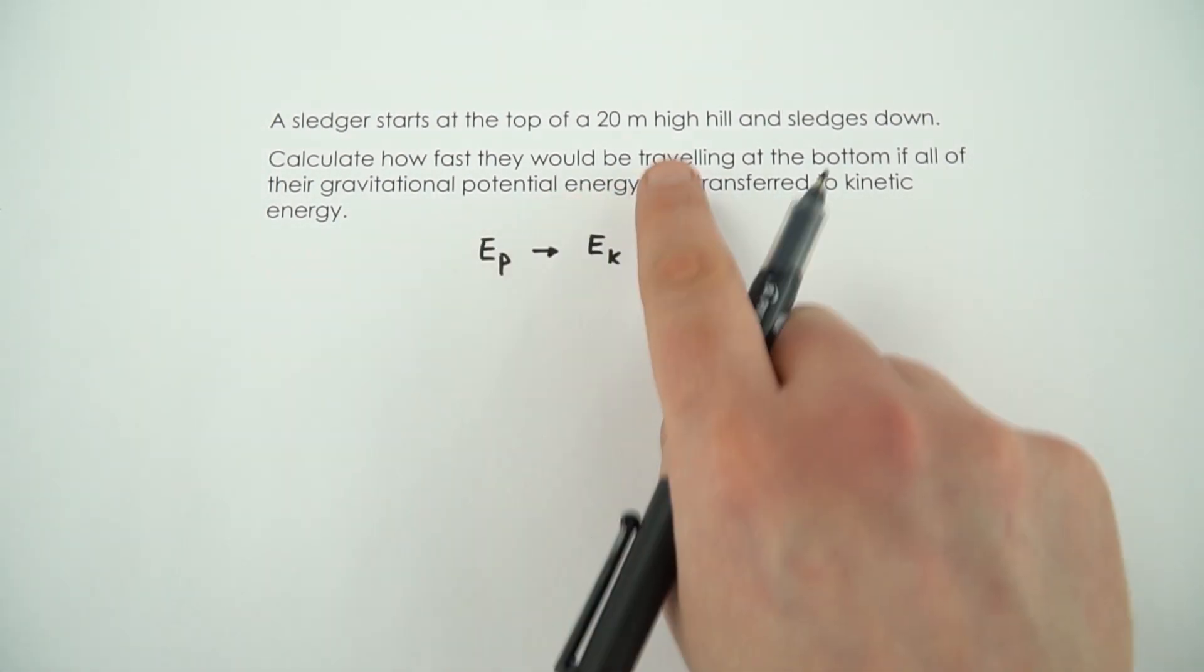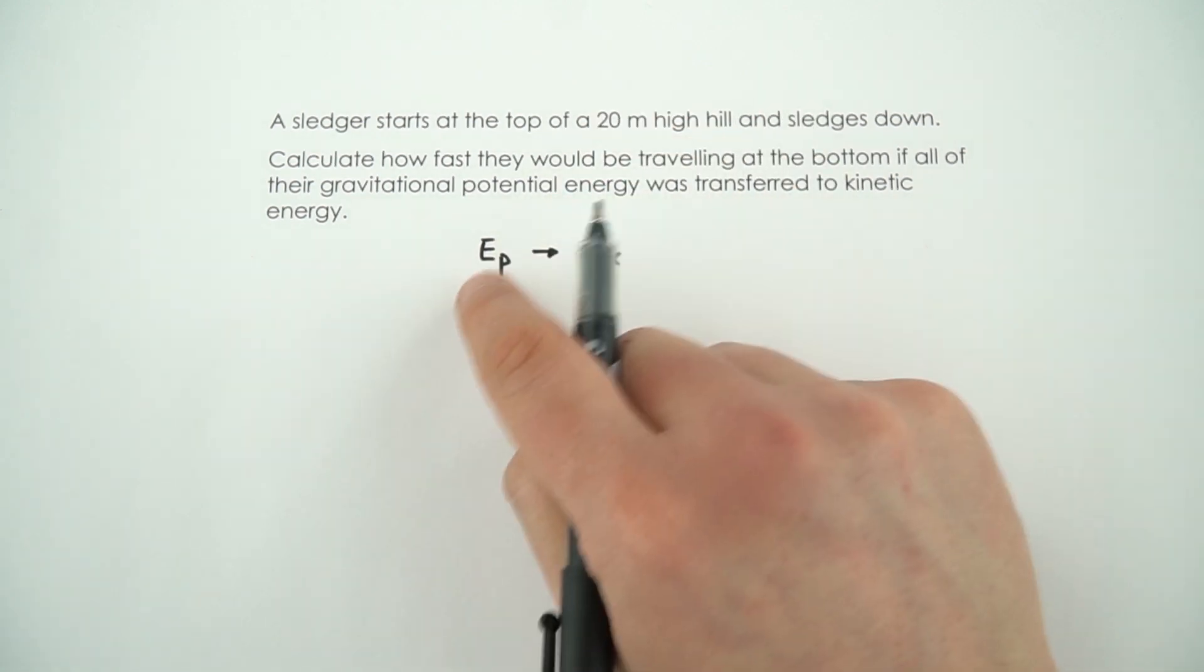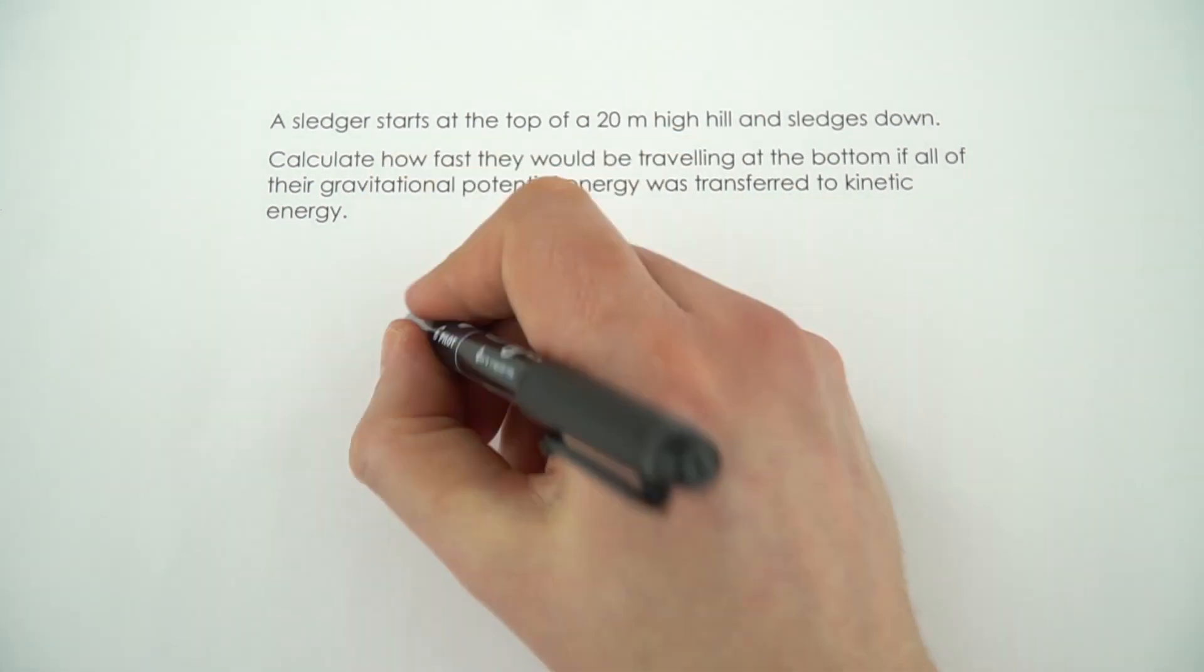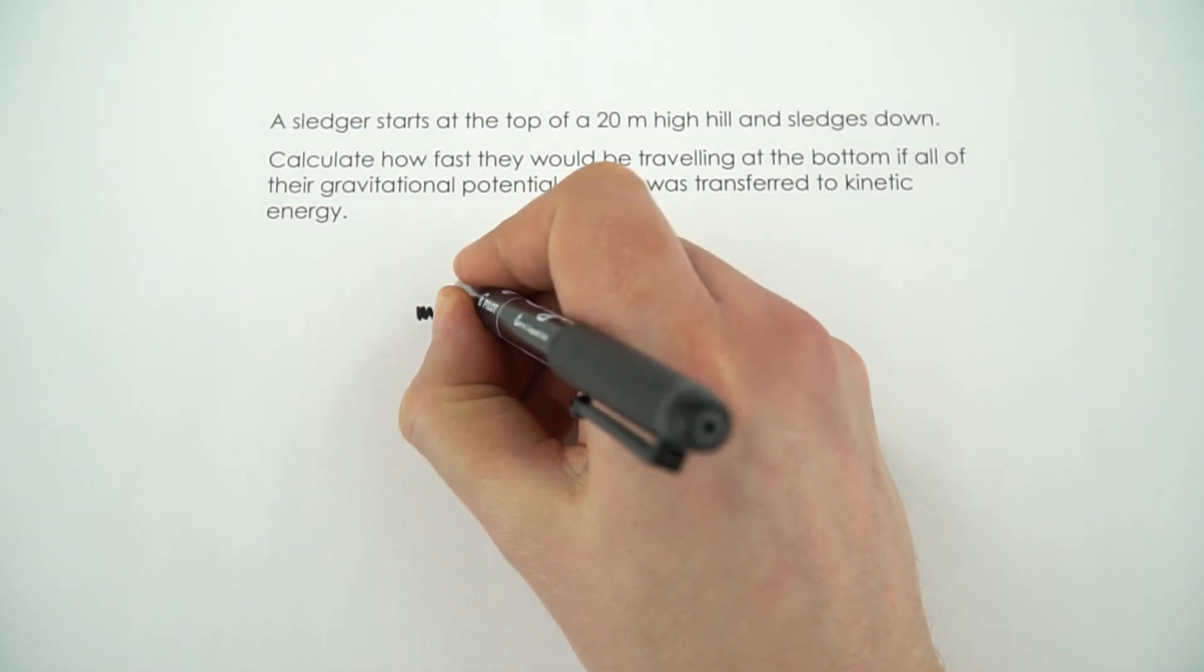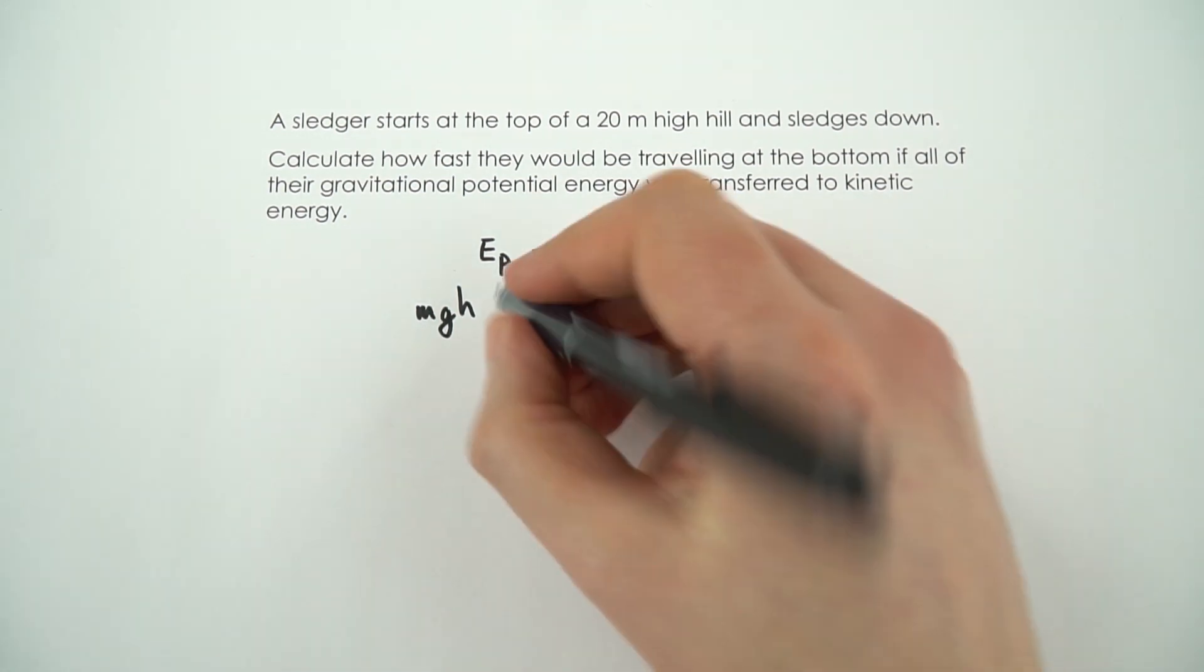So what do we know? We only have one bit of data, really, that the hill is 20 meters high. So first of all let's work out the potential energy. This is going to be equal to mgh and we assume that all of this gets transferred to the kinetic energy at the end.